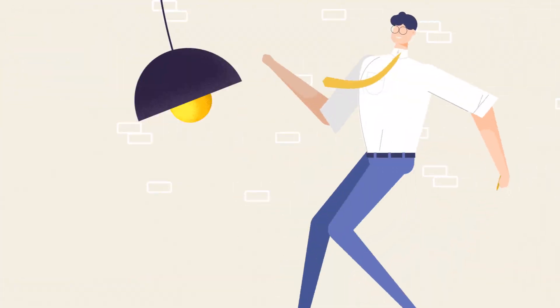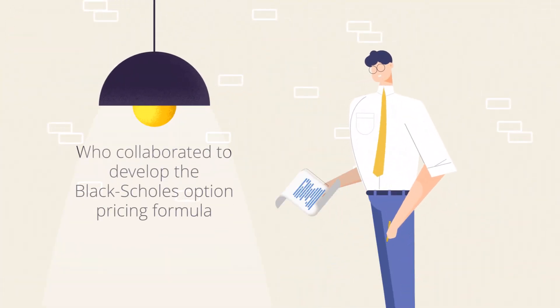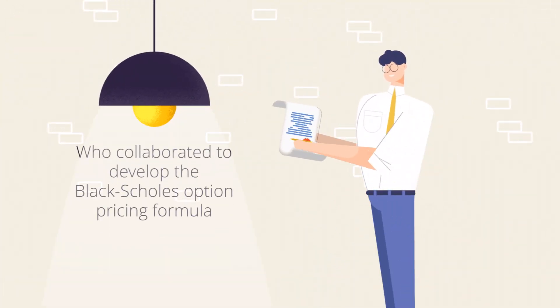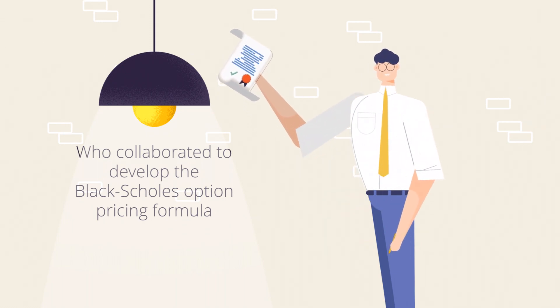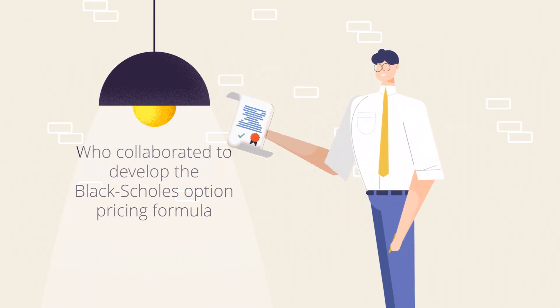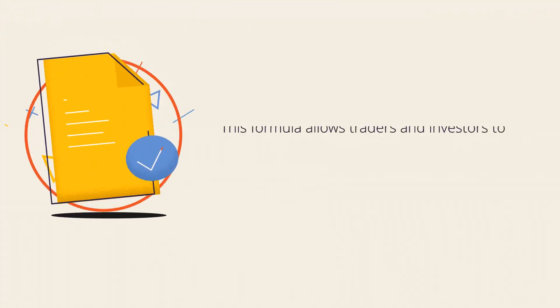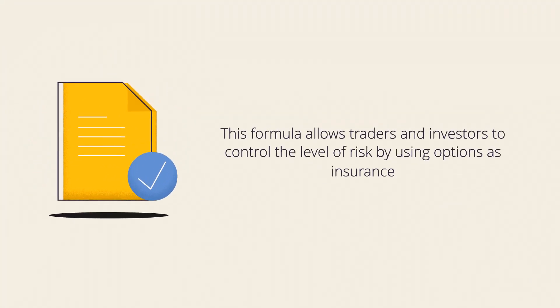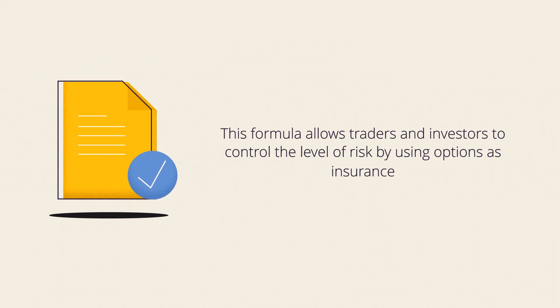Other pioneers of securities market risk were Myron Scholes and Fisher Black, who collaborated to develop the Black-Scholes Option Pricing Formula. This formula allows traders and investors to control the level of risk by using options as insurance.